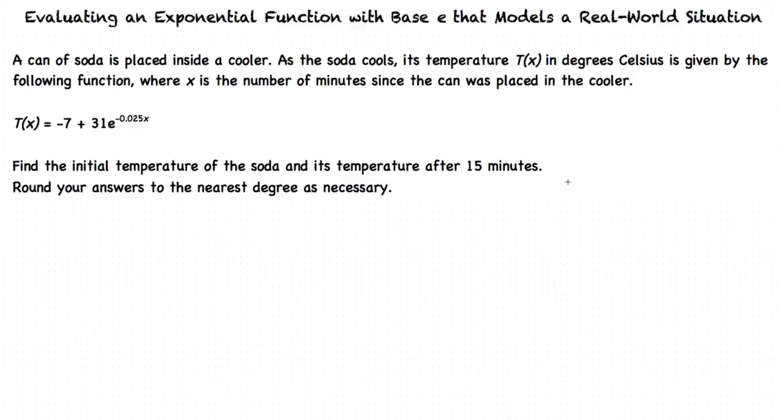A can of soda is placed inside a cooler. As the soda cools, its temperature T(x) in degrees Celsius is given by the following function where x is the number of minutes since the can was placed in the cooler. T(x) equals negative 7 plus 31 times E raised to the negative 0.025x. Find the initial temperature of the soda and its temperature after 15 minutes. Round your answers to the nearest degree as necessary.